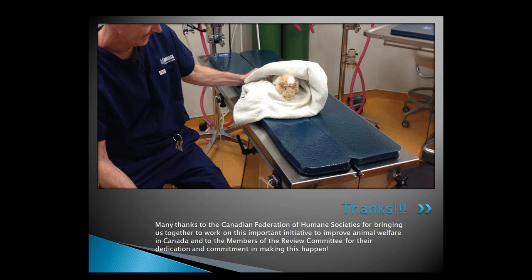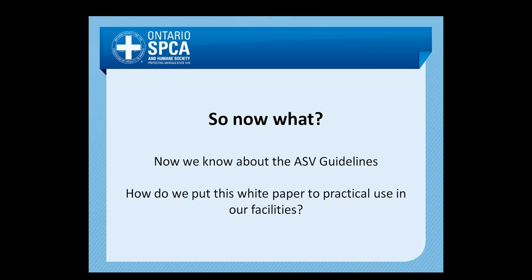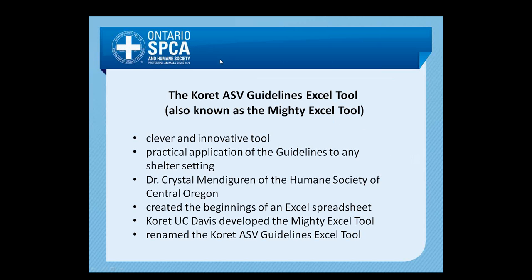We want to say a big thank you to the Canadian Federation of Humane Societies for bringing us all together to work on this important initiative. They started the ball rolling, and everybody jumped in and helped. It's an amazing feat that Canadians now have accepted this document and have standards for care. So now what? We have the guidelines — it's a beautiful little white paper with great big long paragraphs, and not the most practical document to use. The question was: how do we put this white paper to practice so it isn't just collecting dust on the shelf?